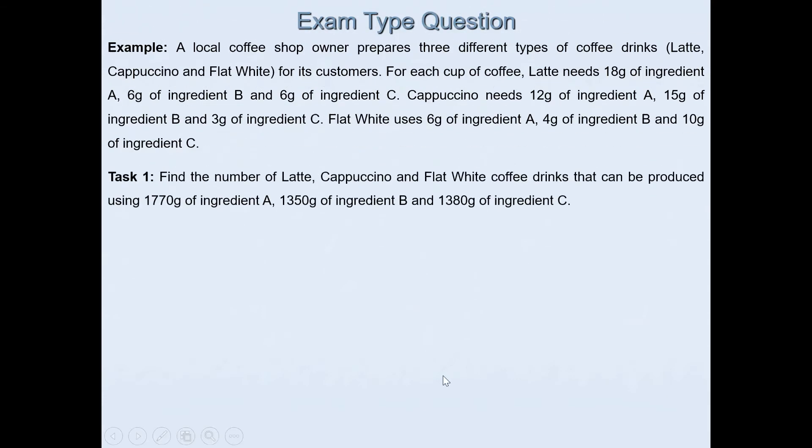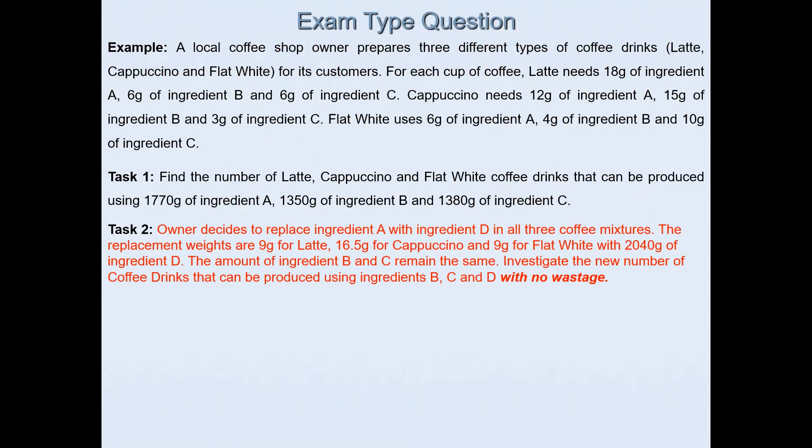Task one says find the number of latte, cappuccino, and flat white coffee drinks that can be produced using 1,770 grams of ingredient C. I've already done this task in my previous video, so please do check that one out. In this video, we will be focusing on the merit part to this problem, the second task which will lead to merits and excellences.